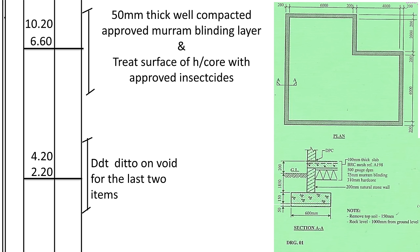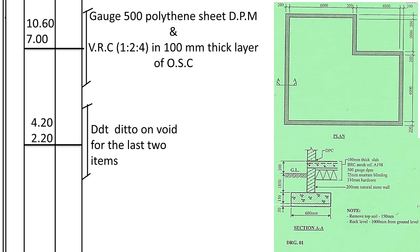For 50mm maram blinding, it sits on top of the hardcore, so we use the same internal dimensions of 10,200 × 6,200, deduct the void the same way as for the hardcore. The same dimensions also apply for the anti-termite treatment.